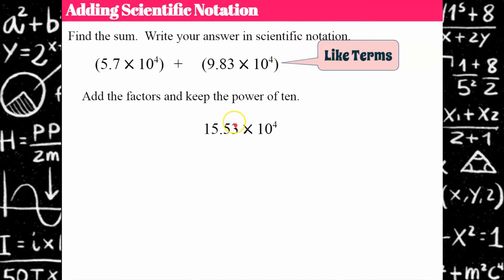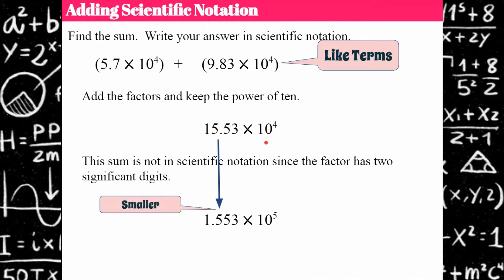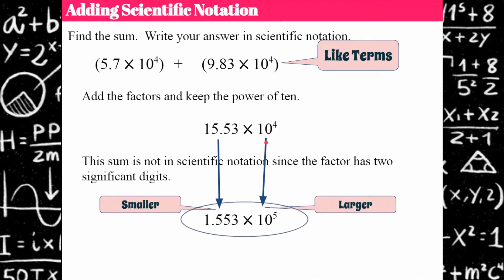The problem says to write your answer in scientific notation, and 15.53 is not in scientific notation. We need one significant digit to the left of the decimal point, so we move it one place. The factor got smaller by one digit, so the power of 10 needs to get larger by one digit — you need to keep the balance. If you make the factor smaller, the power of 10 needs to get larger. And there's our answer.